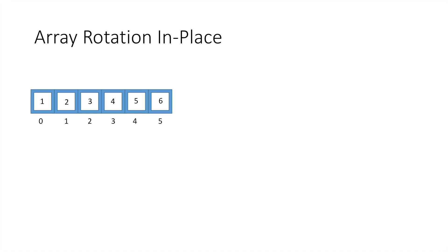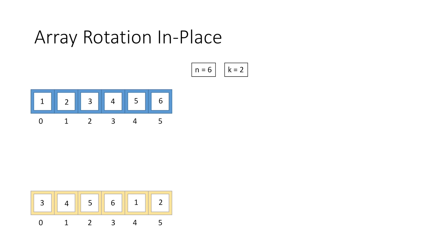Now taking the same array, let's see how we can rotate it in place. The value of n is equal to 6 and k is equal to 2. As we have already seen, the rotated array will look like this. The basic approach that comes to mind is to keep track of every element and shift each one k positions to the left.